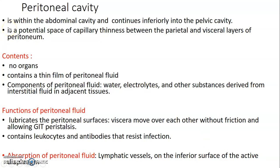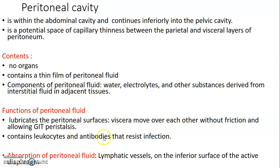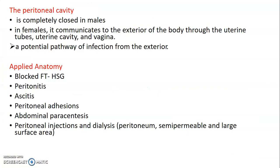The peritoneal cavity is within the abdominal cavity and is a potential space between the parietal and visceral layers of the peritoneum. There are really no organs in the peritoneal cavity — it just contains a thin film of peritoneal fluid with water, electrolytes, and other substances for lubrication, since viscera move via peristalsis. The peritoneum also contains leukocytes and antibodies to help fight infection. Peritoneal fluid is mainly absorbed through lymphatic vessels on the inferior surface of the diaphragm.